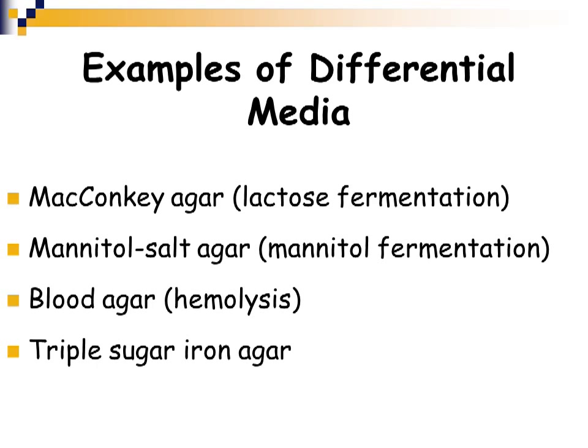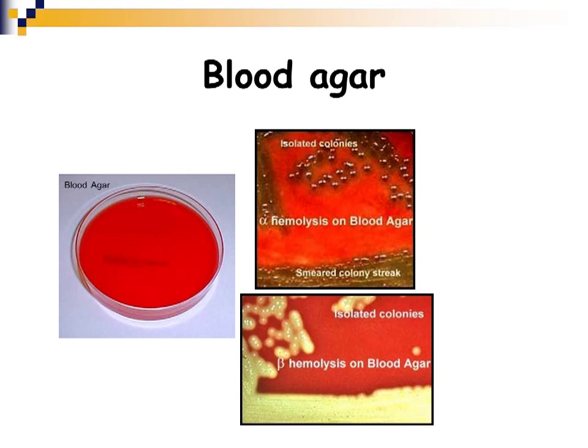Sheep blood agar is probably the most commonly used media in the clinical microbiology lab — it is trypticase soy agar with 5% sheep blood added. It differentiates organisms that can hemolyze red blood cells: organisms with no hemolysis, those with beta hemolysis (a clear zone indicating complete hemolysis), and alpha hemolytic organisms showing partial hemolysis. We'll discuss this in more detail when we cover streptococci in week two.